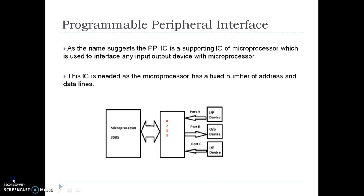As the name suggests, the Programmable Peripheral Interface is a supporting IC of the microprocessor, which is used for the purpose of interfacing with other peripherals or memory. This IC is needed by the microprocessor because most of the microprocessor's work is either to read or write data from memory or peripheral, but there are no dedicated lines for the interfacing purpose, hence 8255 IC is used. The main advantage of 8255 IC is that it can be programmed to do a variety of interfacing functions.